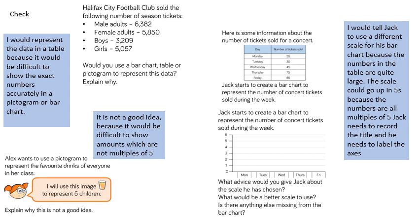Jack has shown us his bar chart using a scale going up in steps of one to represent the number of tickets sold during the week. The advice you could give Jack would be to use a different scale, because the numbers are quite large and if he carried on in steps of one he would need an enormous bar chart. It would be sensible to use a scale that goes up in steps of five, because the numbers are all multiples of five. What is missing on his bar chart? Jack has managed to leave out a title and there are no labels for the vertical and horizontal axis — the x and y-axis.